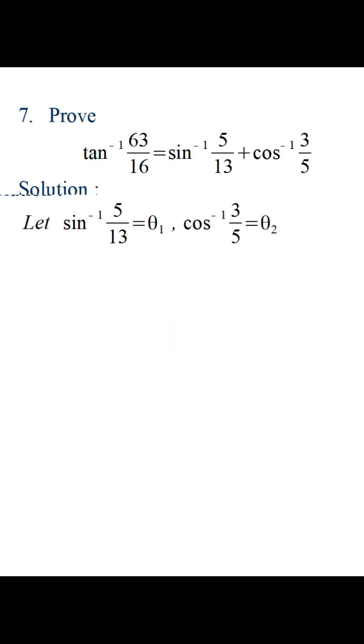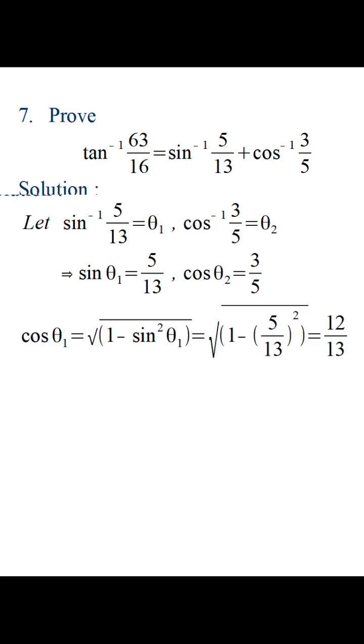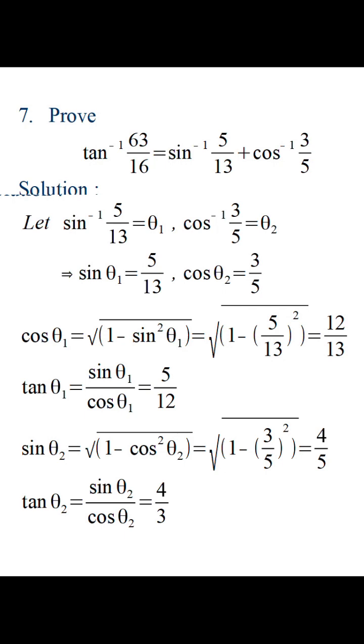Let's start by assuming sin inverse 5 by 13 is equal to theta 1 and cos inverse 3 by 5 is equal to theta 2. From this we can find out cos theta 1 and tan theta 1 and sin theta 2 and tan theta 2.